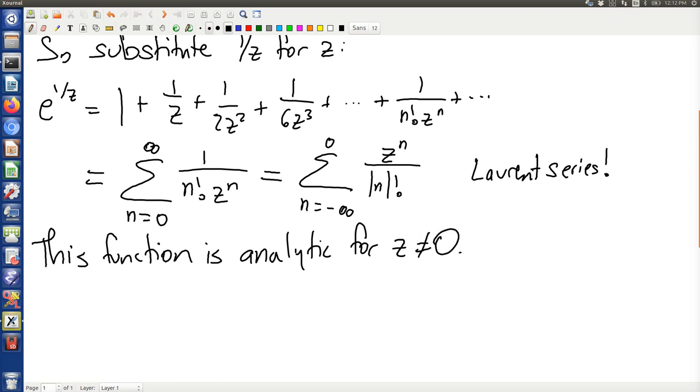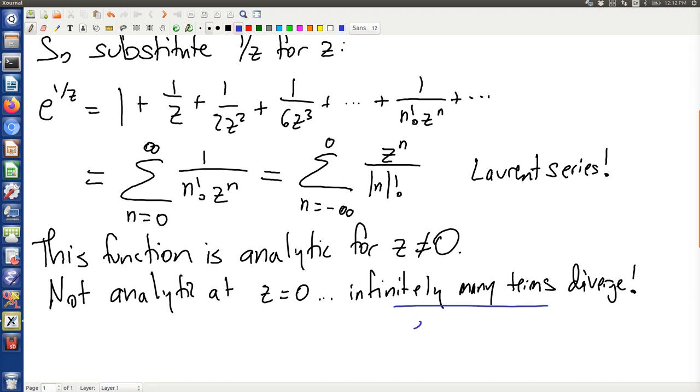Of course, when z is equal to 0, we don't just get 1 divided by 0, we get an infinite number of divide-by-zeros. So that's the bad news. In fact, this particular situation has a name. This is called an essential singularity.